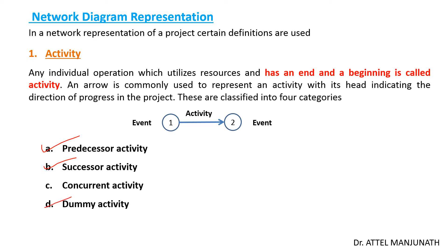The fourth type is the dummy activity. A dummy activity does not consume any resources — its resource value is considered as zero. The dummy activity is inserted in the network in two situations: first, to distinguish activities with a common starting point and finishing point, and second, to identify and maintain the proper precedence relationship between activities that are not connected by events.